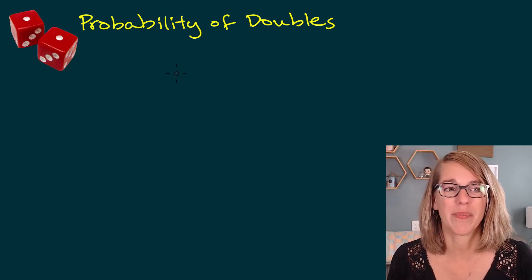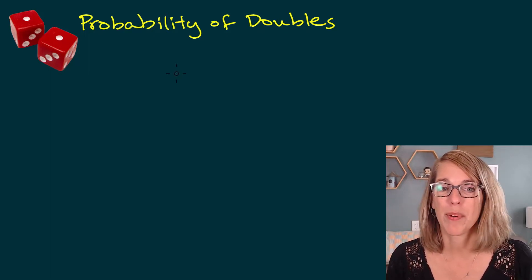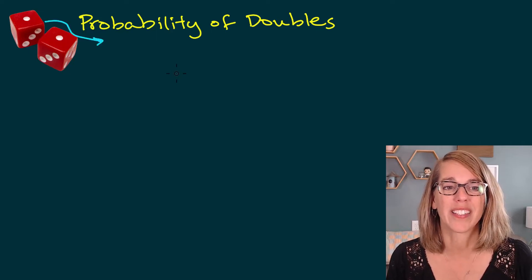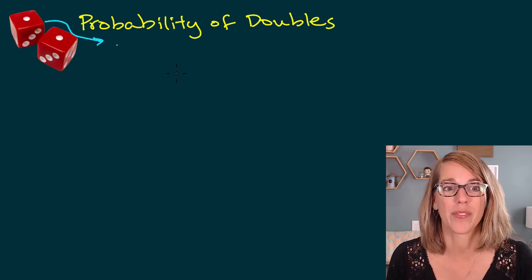And I'm going to go ahead and develop the sample space here. As I put my sample space together, for the first dice, I can come up with any number one through six.